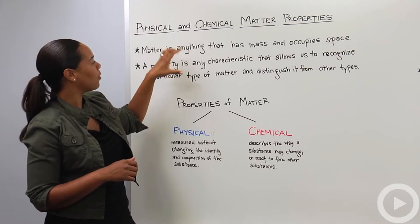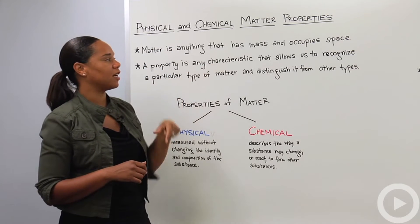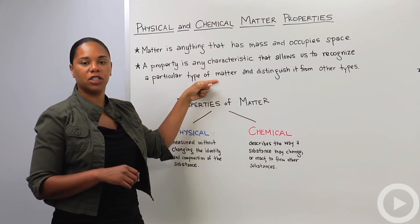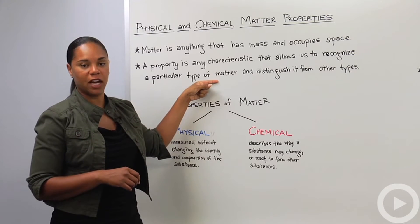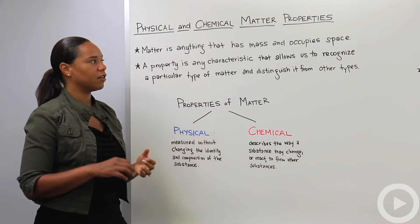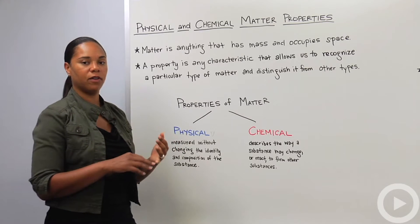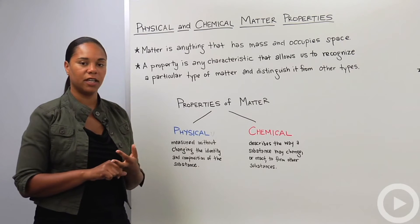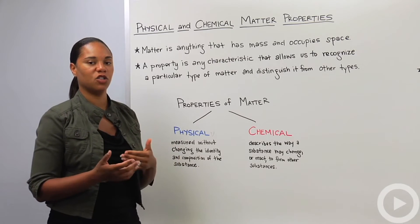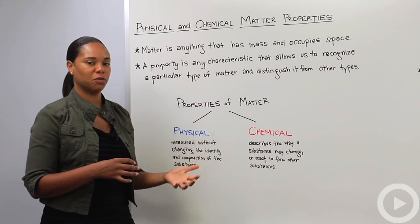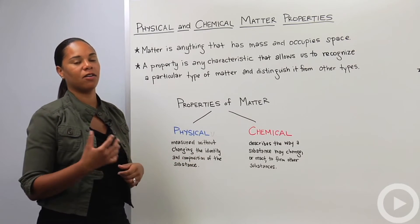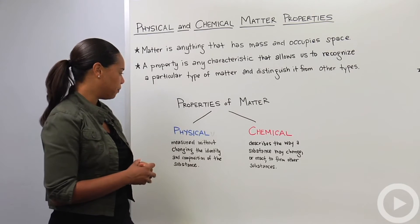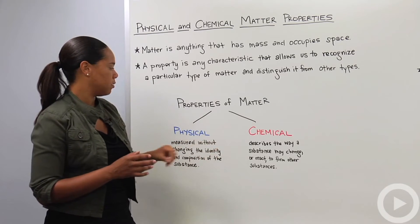A property is any characteristic that allows us to recognize a particular type of matter and distinguish it from other types. Within that, there are two concepts: physical properties and chemical properties. You shouldn't get discouraged — distinguishing between a physical property and a chemical property definitely takes some time and diligence.